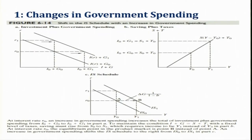Coming to the first part, changes in government spending. I assume that in this diagram the initial level of government spending is G naught and the initial level of investment is also this much. Accordingly, our initial IS curve is this one — this is the initial IS curve — and when there is an increase in government expenditure, the curve will be shifting rightwards.